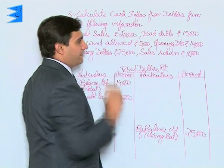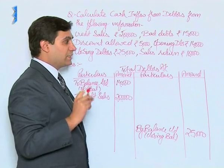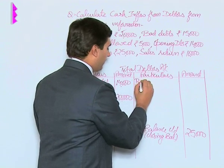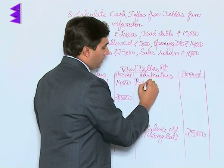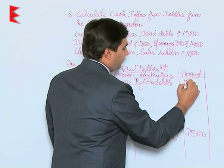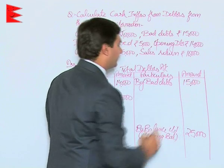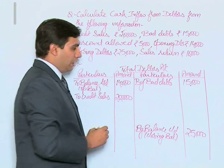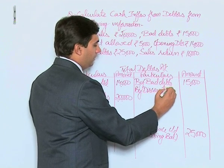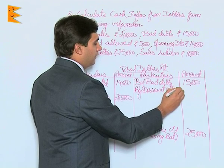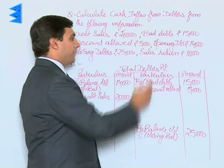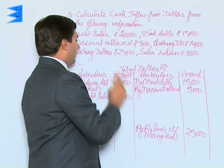Bad debts means the amount debtors are not paying — it is a loss and leads to a reduction in debtors. So we enter: by bad debts — 15,000 on the credit side. Then by discount allowed — 5,000 rupees on the credit side.